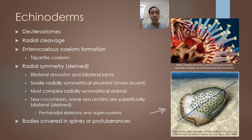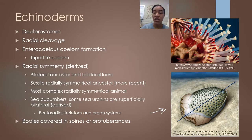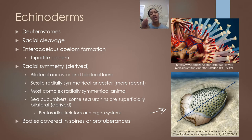Despite the fact that some echinoderms are bilaterally symmetrical, they do still have a pentaradial skeleton, and this is how we know that bilateral symmetry in sea cucumbers and some sea urchins is a derived characteristic rather than ancestral. The reason echinoderms get their name is because their body is covered in spines or protuberances — these protuberances are where they get the name echinoderm.